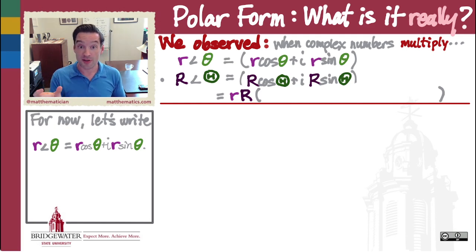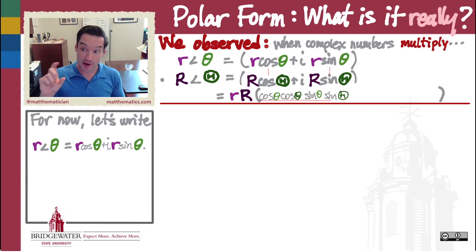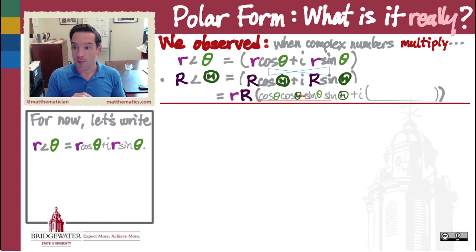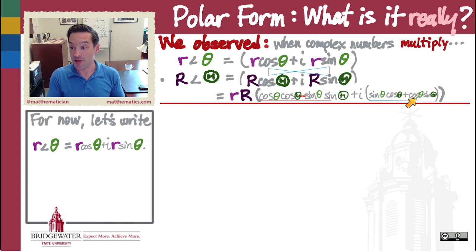Anytime I'm multiplying two complex numbers like this, I ask myself: what products give me something real and what products give me something purely imaginary? The two products giving something real are cosθ·cosΘ and also i·sinθ times i·sinΘ — but when those i's multiply together they give a real number, specifically negative one, so we get a minus sign. The real part is cosθ·cosΘ − sinθ·sinΘ. The imaginary part comes from the cross terms: cosθ·sinΘ + sinθ·cosΘ, with no minus sign since we never multiply i by another i.